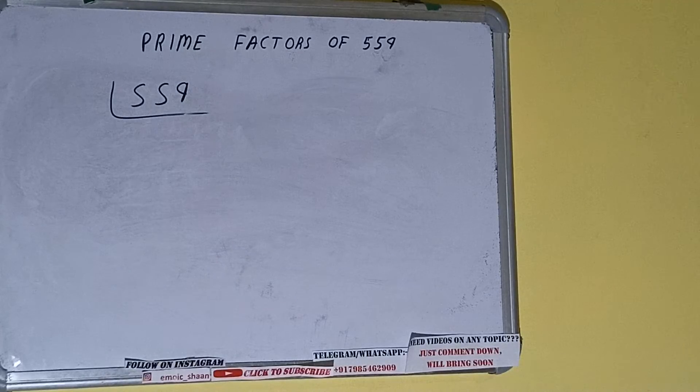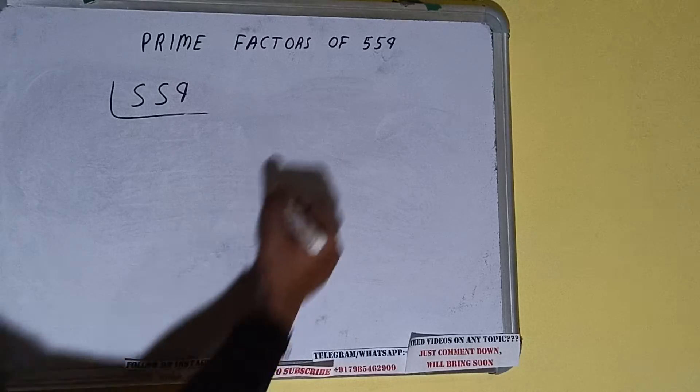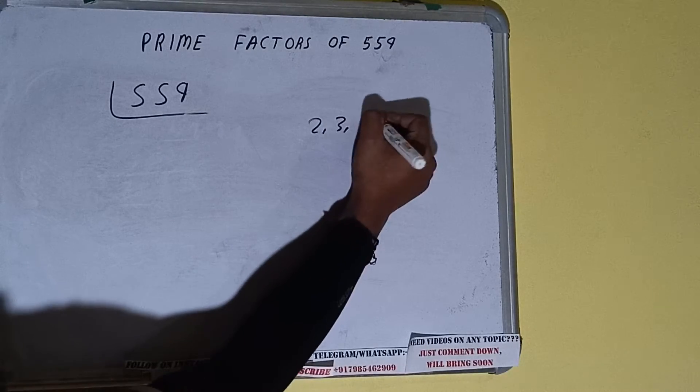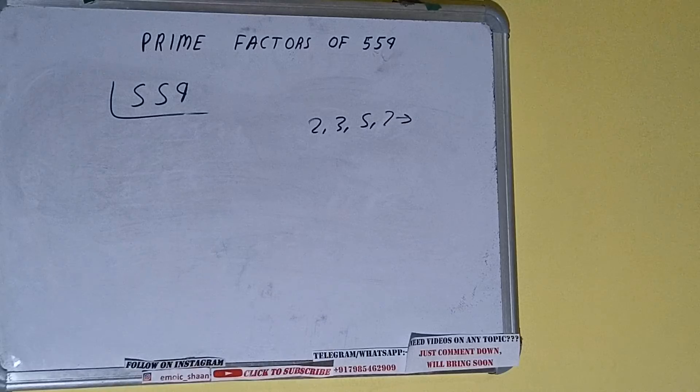First of all, we need to write the number like this. The next thing we need to know about is what are prime numbers. Prime numbers are numbers that are divisible by 1 and the number itself, like 2, 3, 5, 7, and so on.